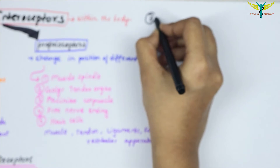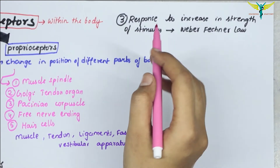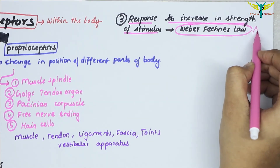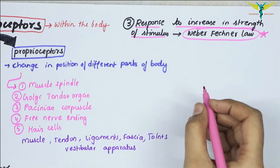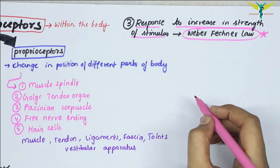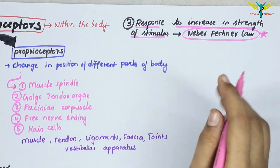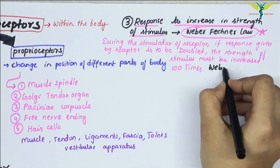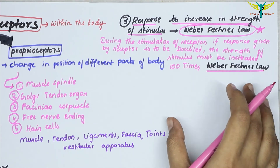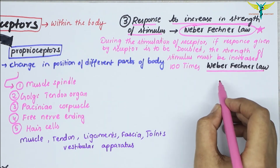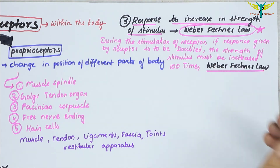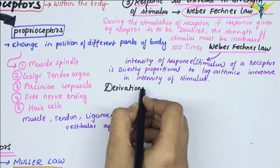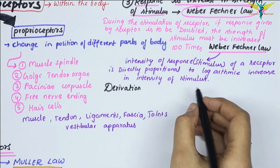The third property of receptors is the response to an increase in strength of the stimulus — this is the Weber-Fechner Law, and it is very important to remember. During stimulation of a receptor, if the response given by the receptor is to be doubled, the strength of the stimulus must be increased a hundred times. This phenomenon is known as the Weber-Fechner Law. It states that the intensity of response of a receptor is directly proportional to the logarithmic increase in the intensity of the stimulus.